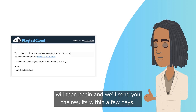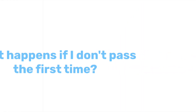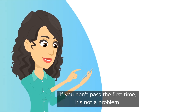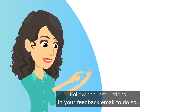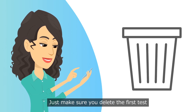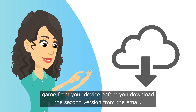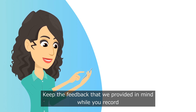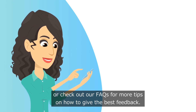The review process will then begin and we will send you the results within a few days. If you don't pass the first time it's not a problem — you can try the test again. Follow the instructions in your feedback email to do so. Just make sure you delete the first test game from your device before you download the second version from the email. Keep the feedback that we provided in mind while you record, or check out our FAQs for more tips on how to give the best feedback.